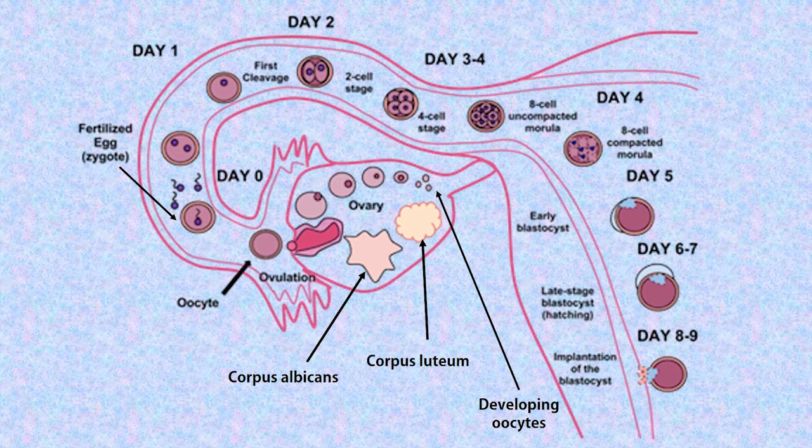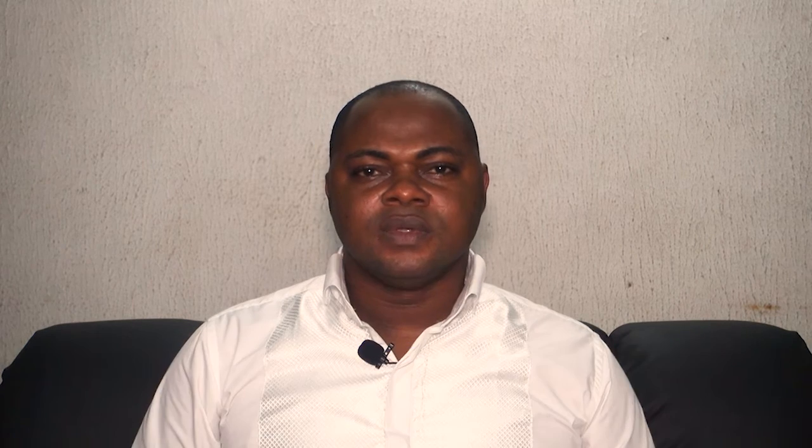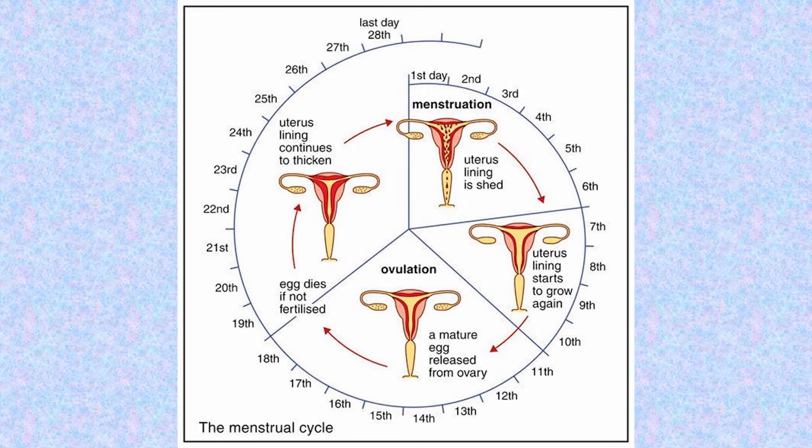It takes 3 to 4 days for the fertilized ovum to reach the uterus for implantation. However, if fertilization does not occur, the levels of progesterone and estrogen drop and the corpus luteum degenerates by a process known as luteolysis to form corpus albicans. As a result, menstruation begins again, which marks the beginning of another menstrual cycle, usually after 28 days of the previous one. This continues every 28 days until the woman reaches menopause.